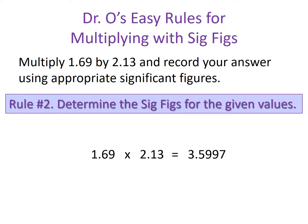Rule number two says determine the significant figures for the given values. Our given values are 1.69 and 2.13. Rule number one regarding significant figures deals with leading zeros — we have none. Rule number two deals with trailing zeros — we have none. Rule number three says all numbers that are not leading zeros or trailing zeros count. So for 1.69, all three digits count, which means 1.69 has three significant figures.